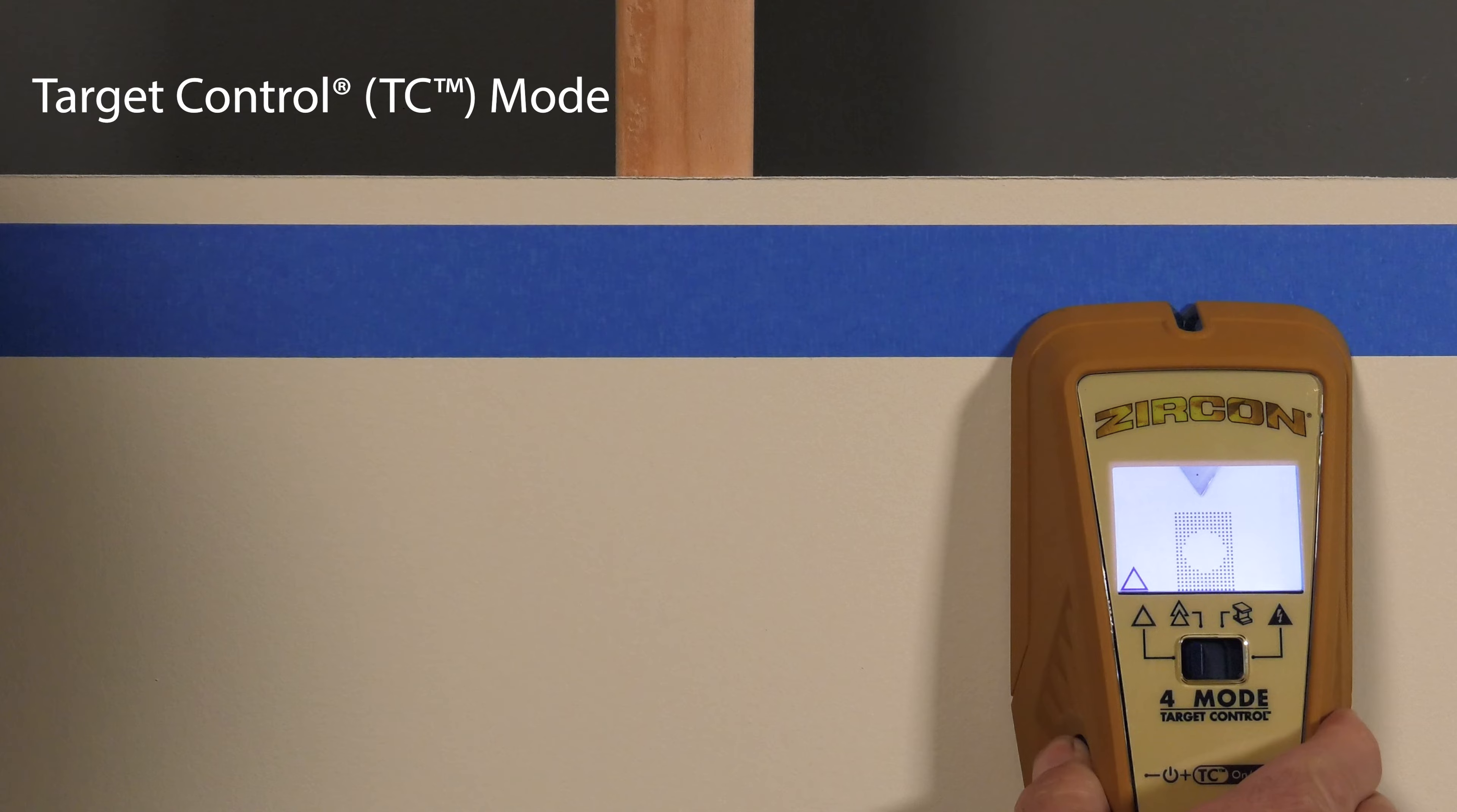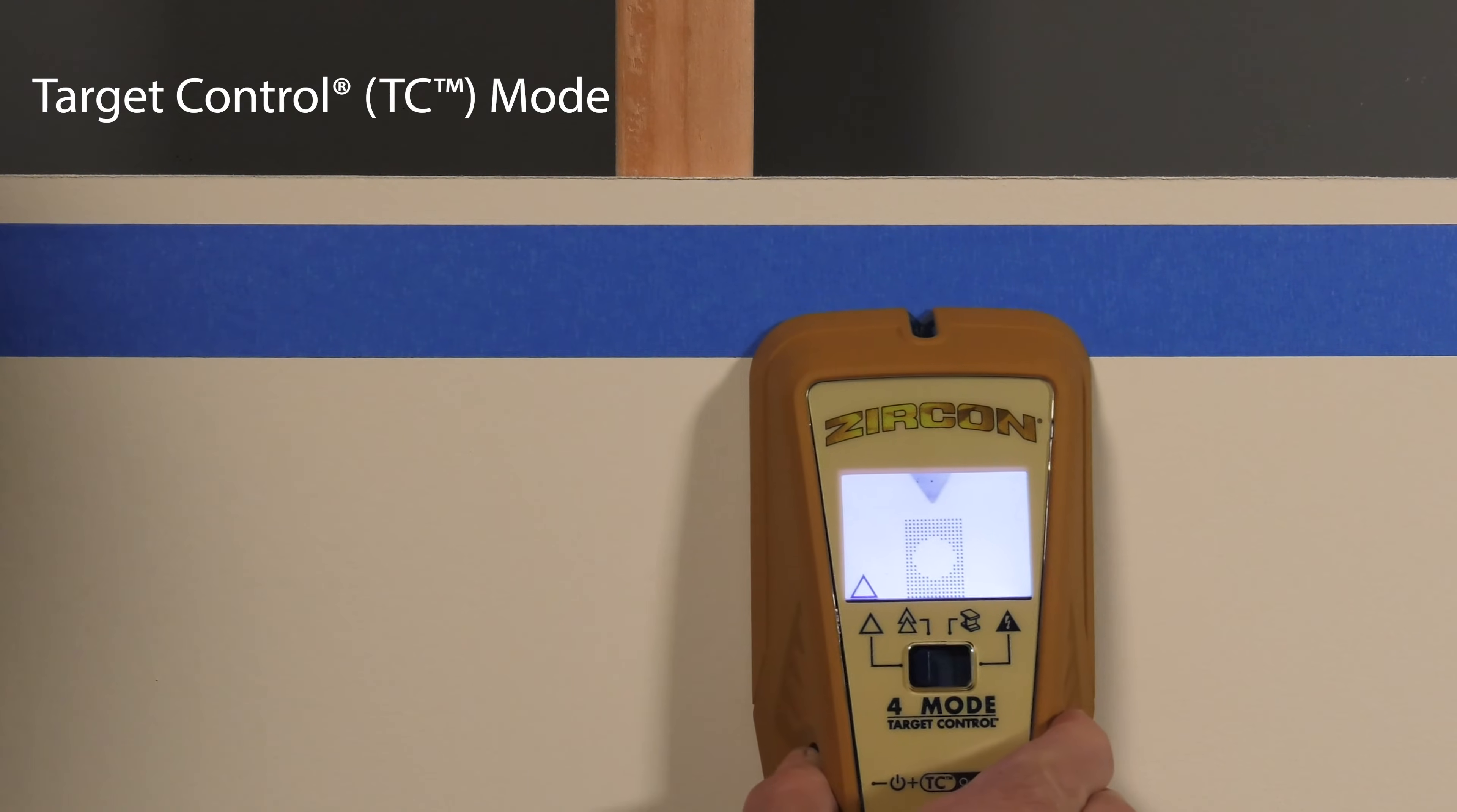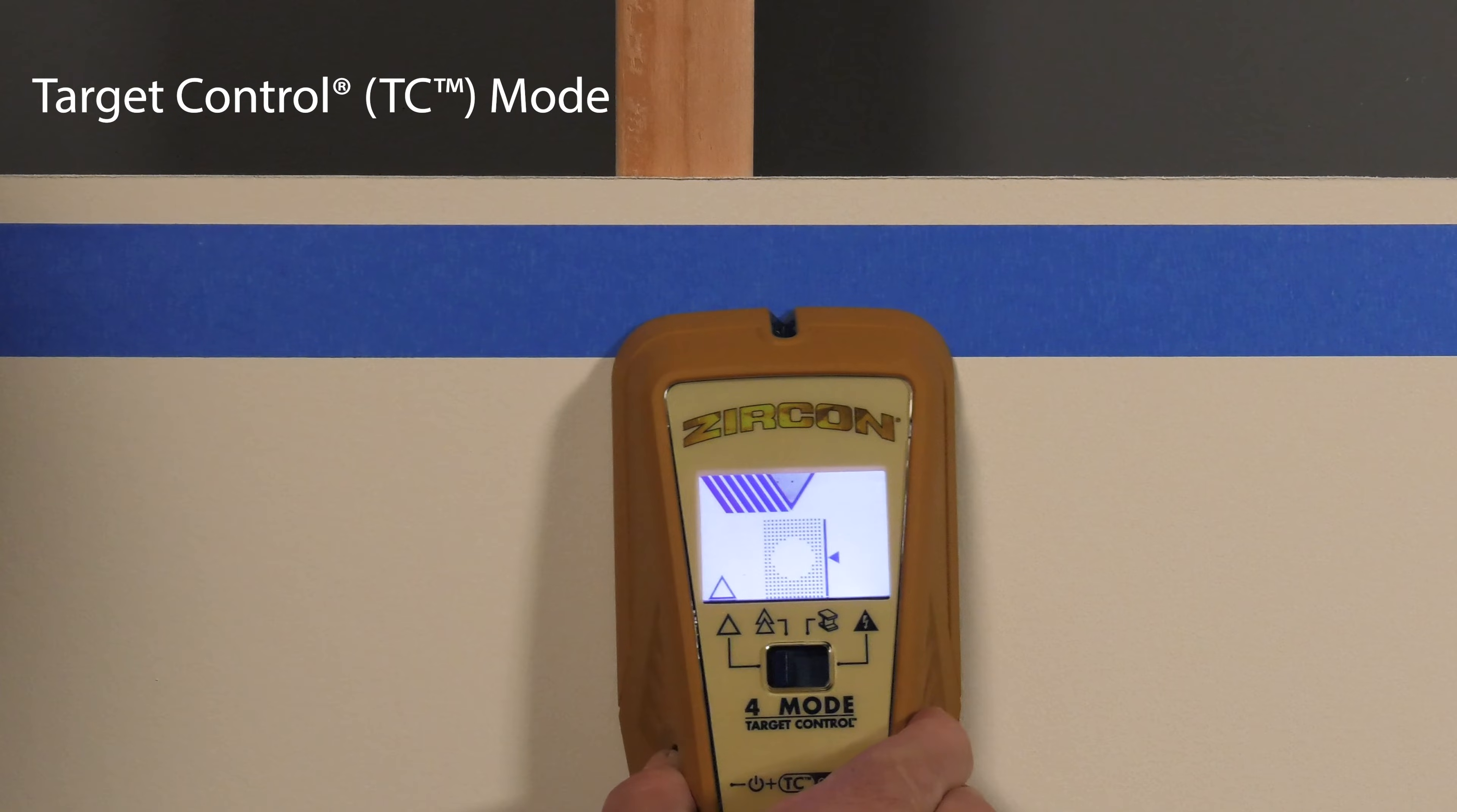Wait for the tool to beep to confirm calibration has completed. Keeping the button pressed, slowly slide the scanner horizontally, perpendicular to the studs. As the tool approaches the stud, the display will indicate when you are near and find the stud edge.